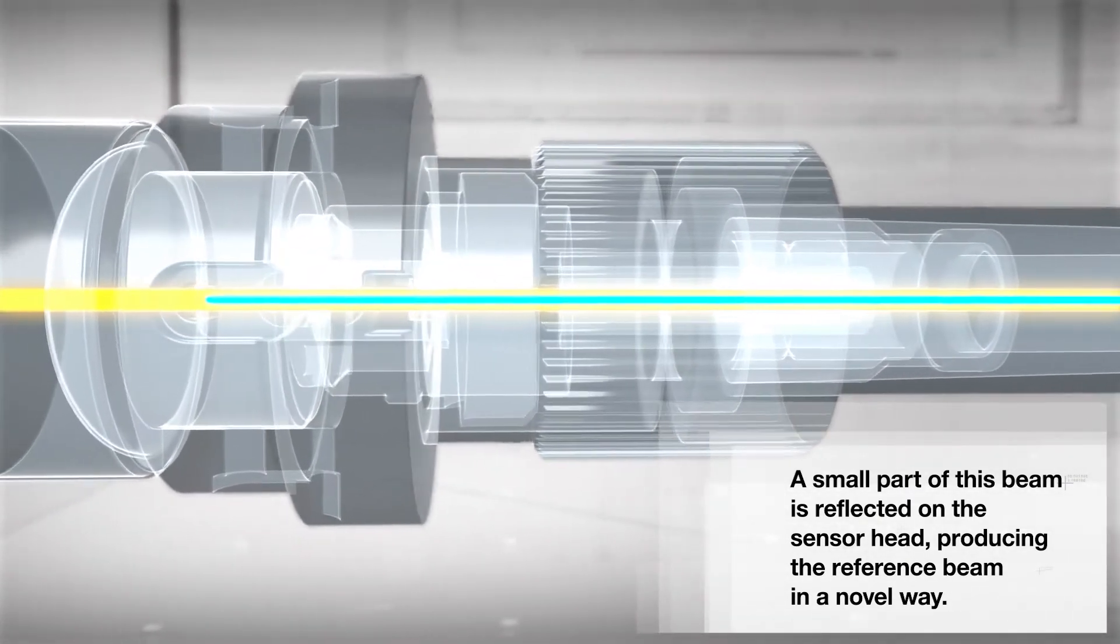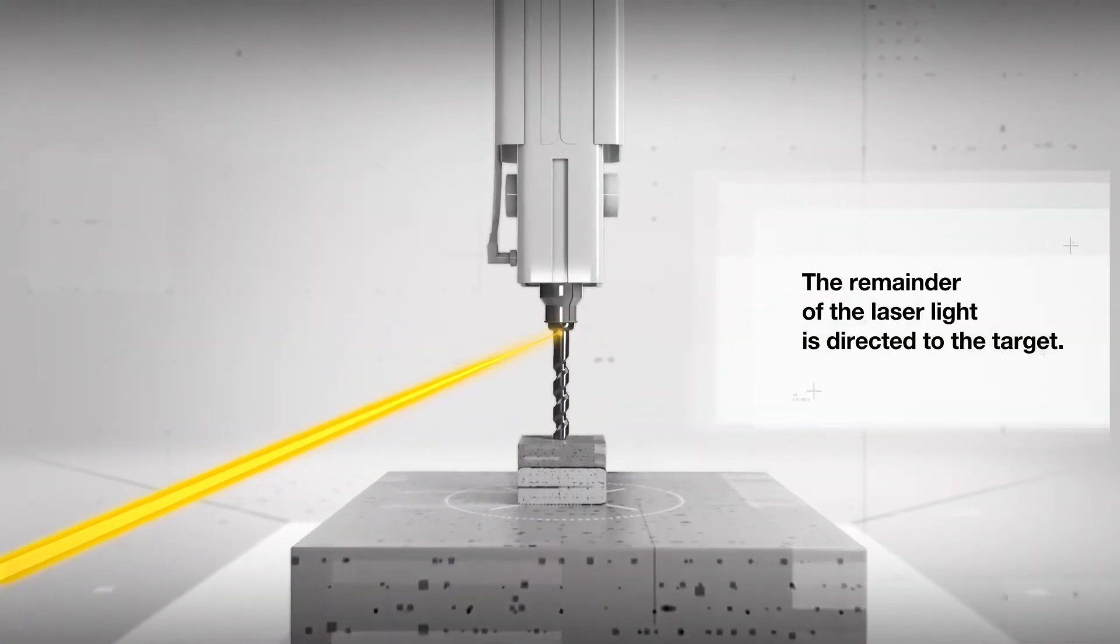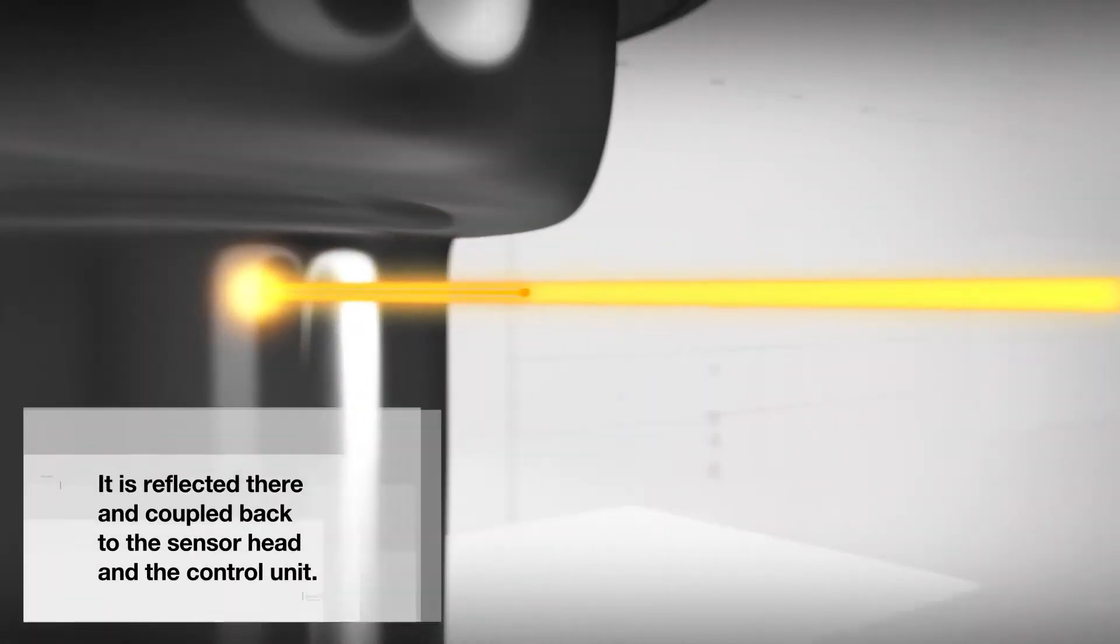The remainder of the laser light is directed to the target. It is reflected there and coupled back to the sensor head and the control unit.